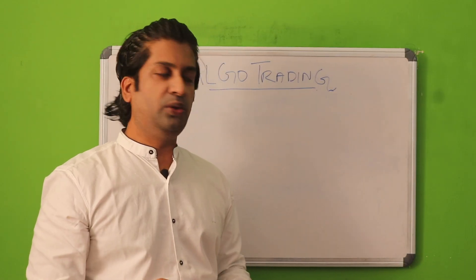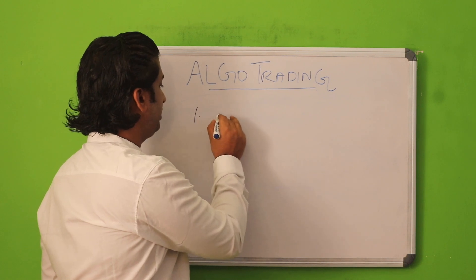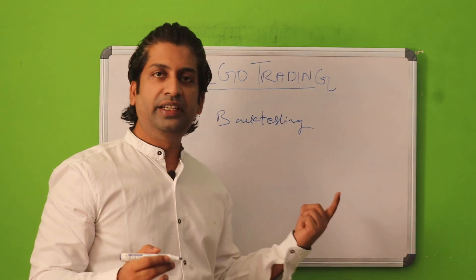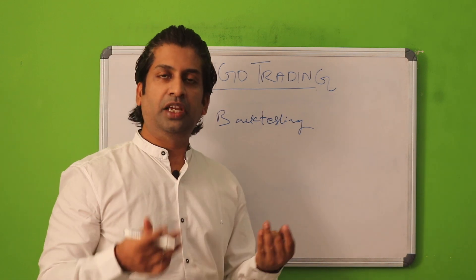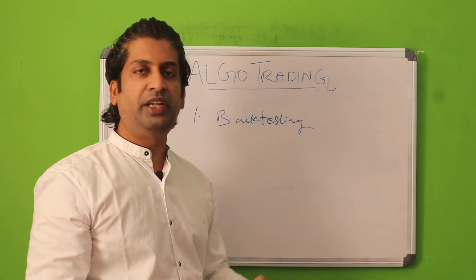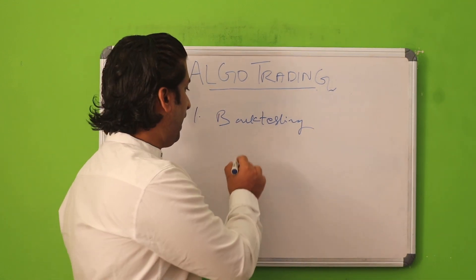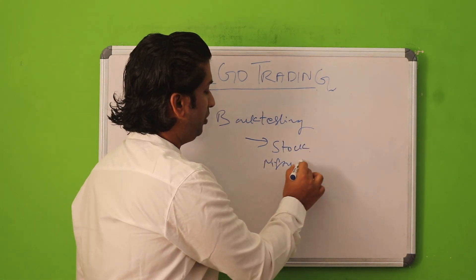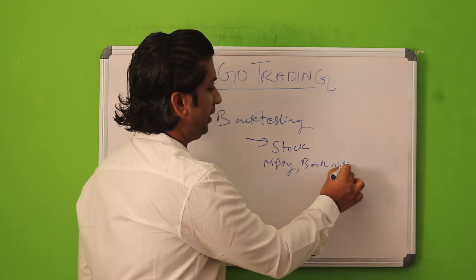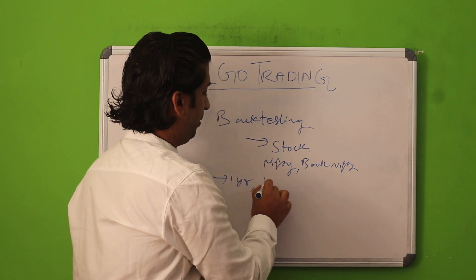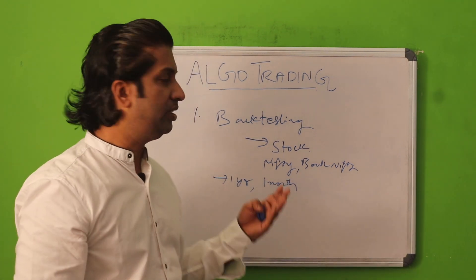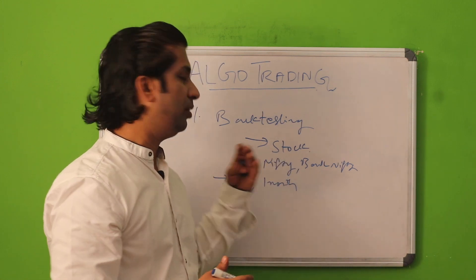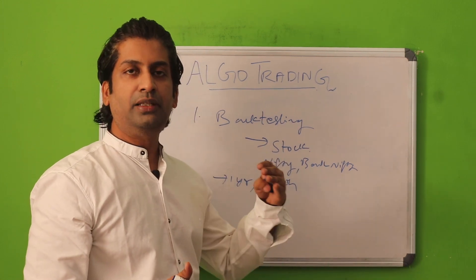Now I will tell you the advantages of algo trading. The first and most important advantage is backtesting. For example, if you have an indicator — say simple moving average or VWAP, any indicator you are depending on — you have to backtest it on stocks, on Nifty, or Bank Nifty. You can backtest it for one year or one month and see the last month's performance. When you backtest, you can see how the indicator works on that particular stock or market.